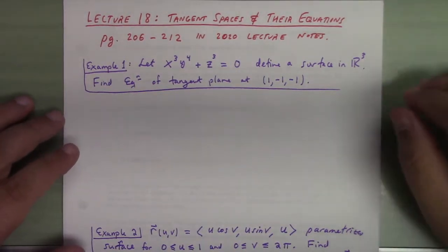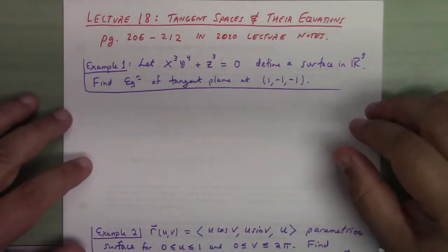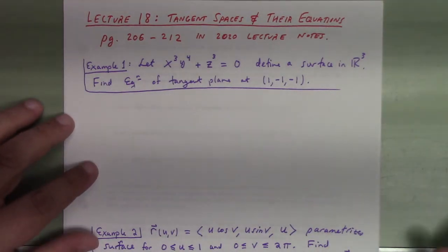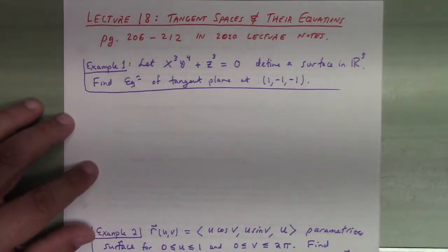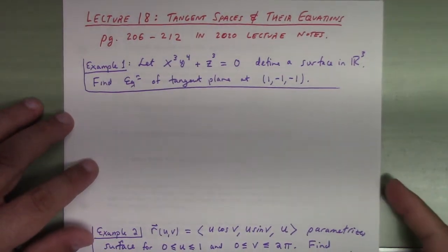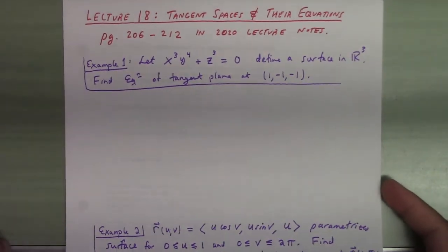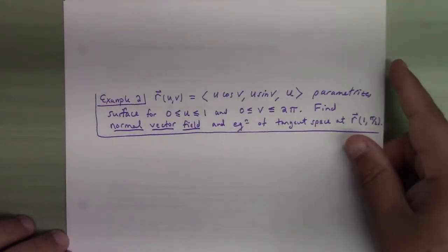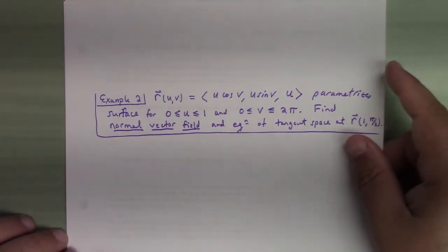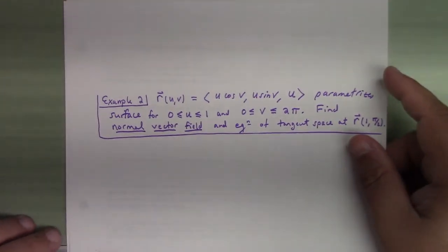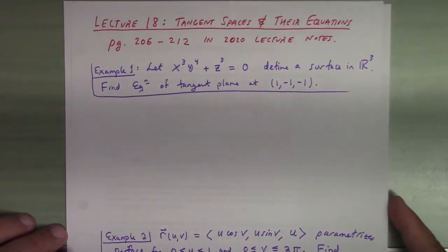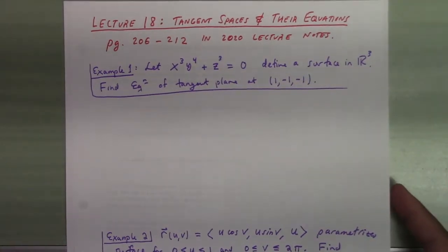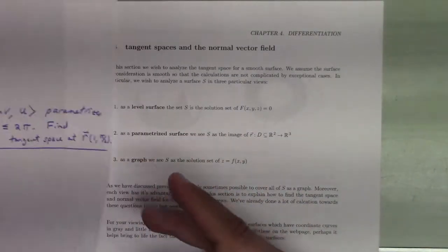This is lecture 18, which is going to concern tangent spaces and their equations. Here are two problems we're going to figure out how to do in addition to the notes — example one and example two — which we'll come back to once we learn the material we need. This is from pages 206 and 212 in the 2020 lecture notes.